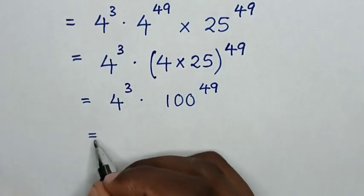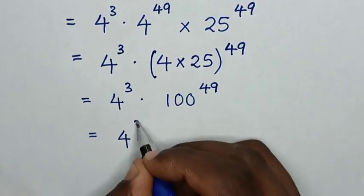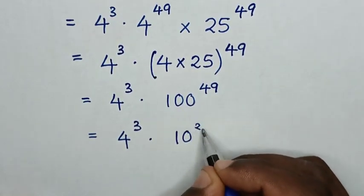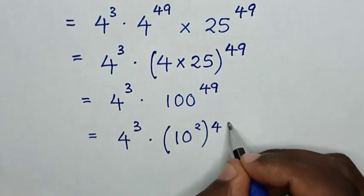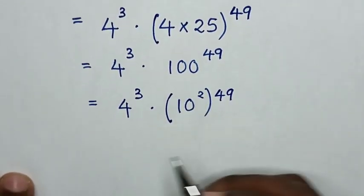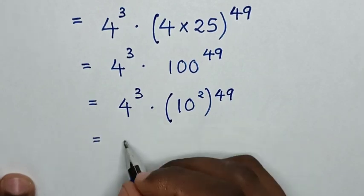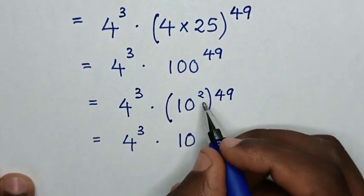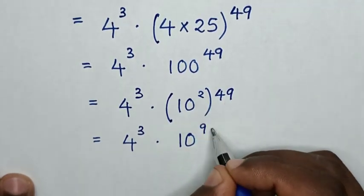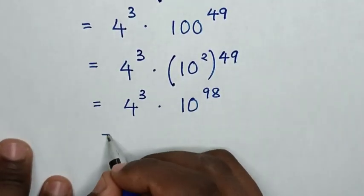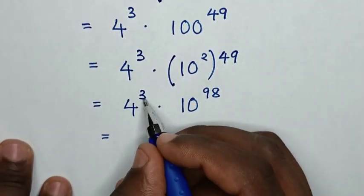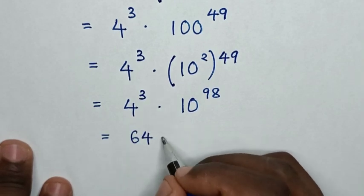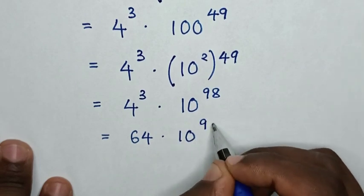Then it will be equal to 4 power of 3, then times — this 100 is the same as 10 squared, bracket power of 49. In the next step, 4 power of 3 is the same as 4 times 4 times 4, which is 64, then times 10 power of 98.